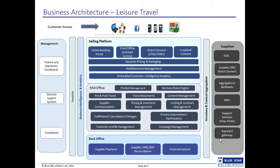This is the Smart Travel business architecture for leisure travel. It consists of various modules. To begin with, Customer Access — it enables the customer to access the Smart Travel application through internet, social networking sites, mobile applications and call centers.